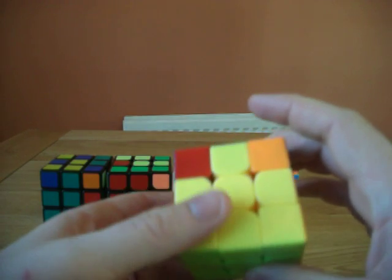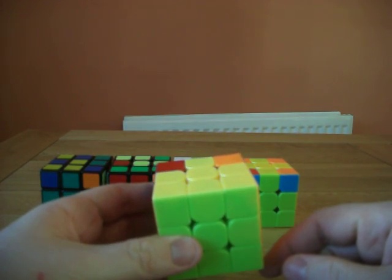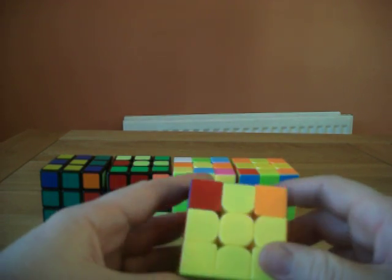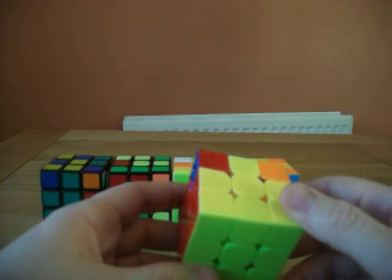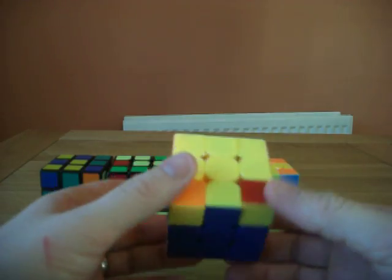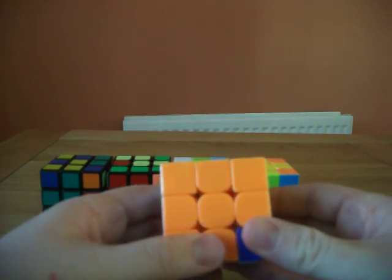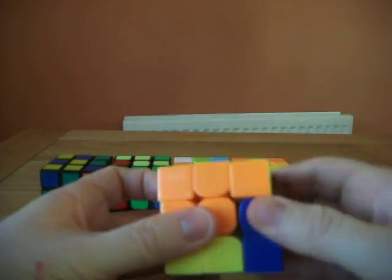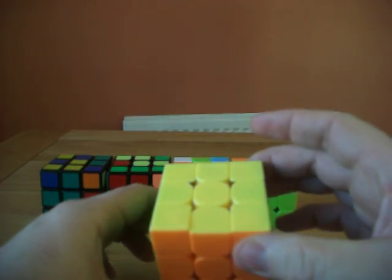Last but not least, you solve all the corners that are left over. You will either end up with a solved Rubik's Cube or something like this. Then it's a case of just using one algorithm, such as this, to solve it.